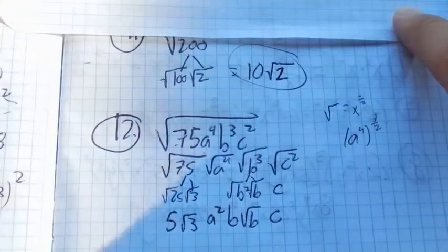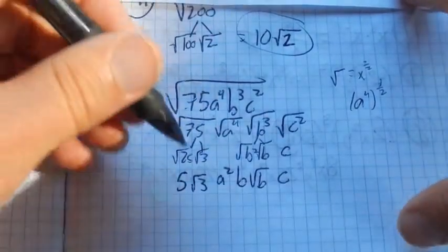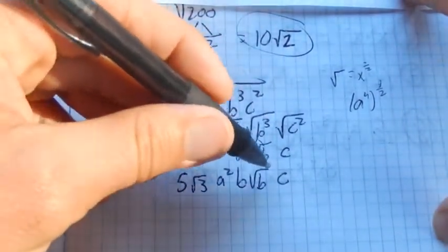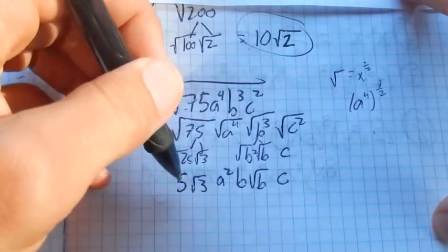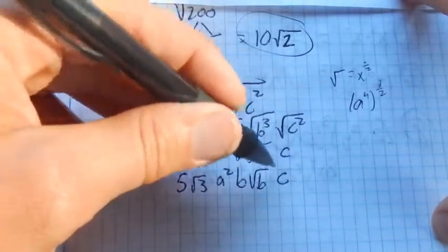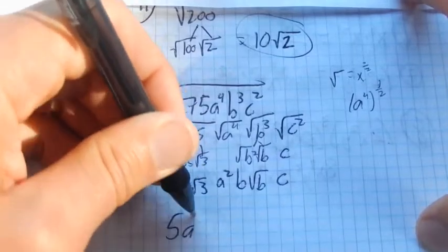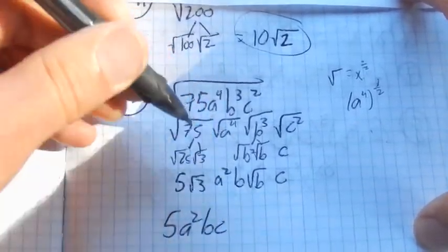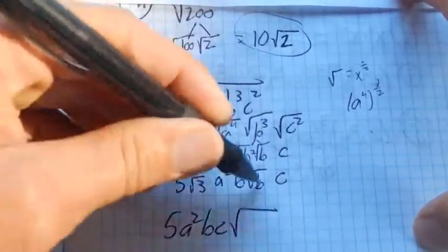So now I have that. And so now I'm almost there for my whole idea. I'm going to take everything that is outside of the radical and put it out front. So I have 5a squared bc times the square root of 3 times b.